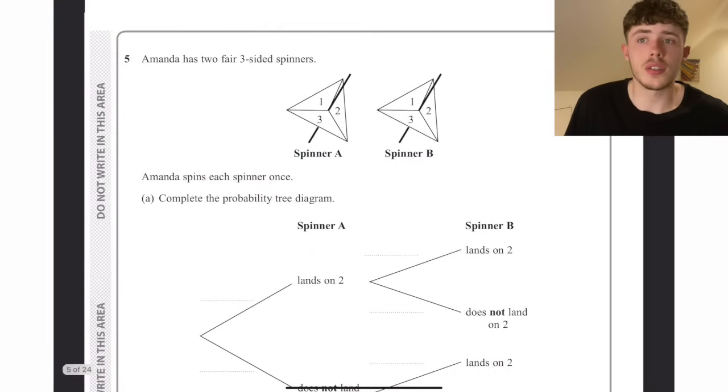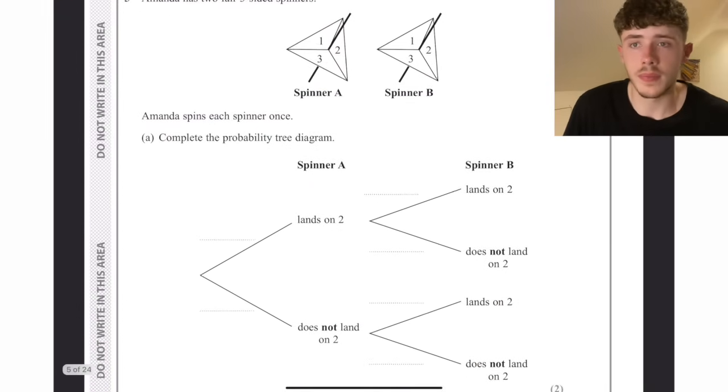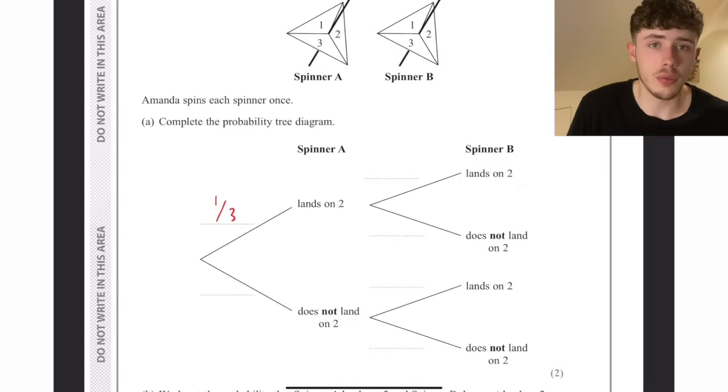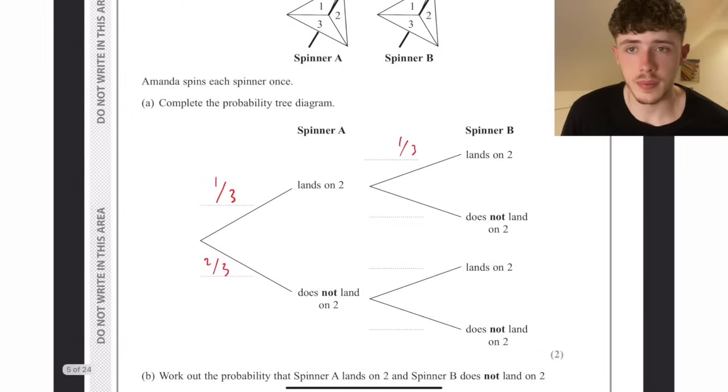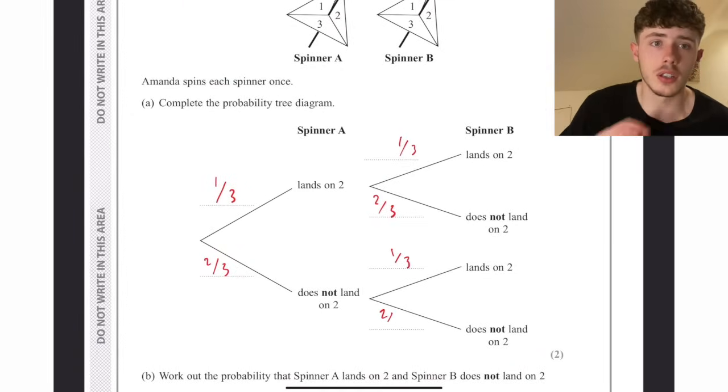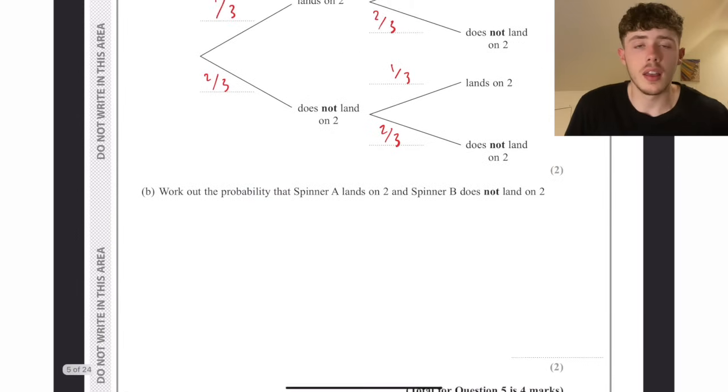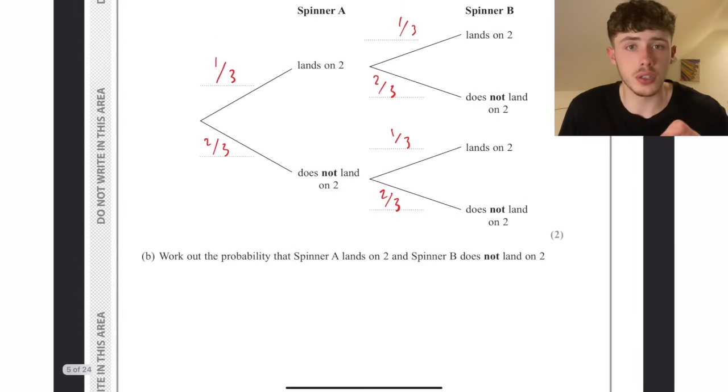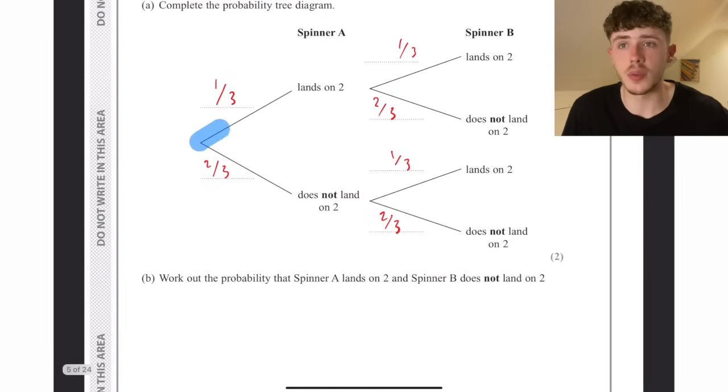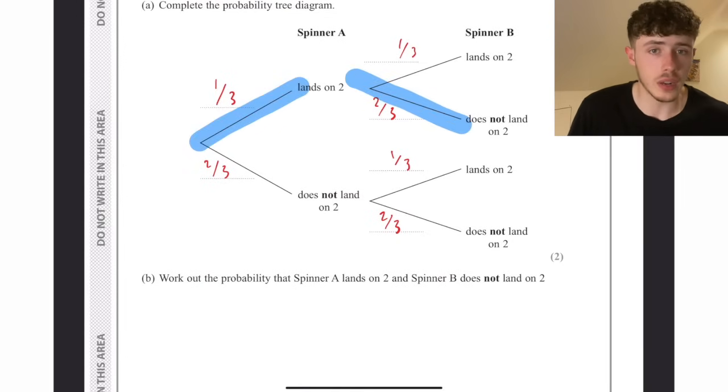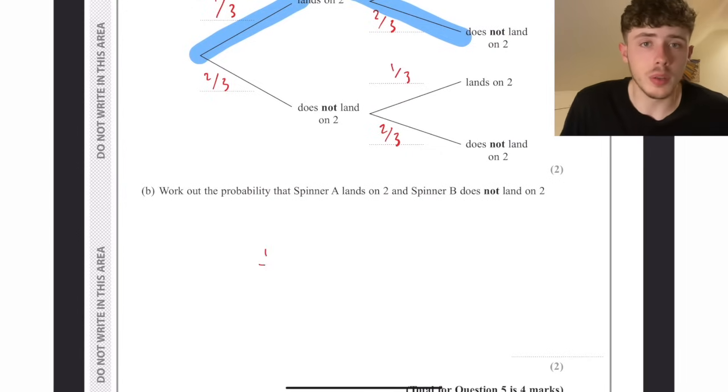Question five, this is filling in the probability trees. The probability of landing on two is one in three, so not landing on two is two in three, and this is repeated for spinner B. It will be a third, two thirds, a third and two thirds. For joint probabilities, I highly recommend highlighting the branches we have to go through. We go up to land on two and down to does not land on two, multiply those fractions together, so one third times two thirds is two over nine.